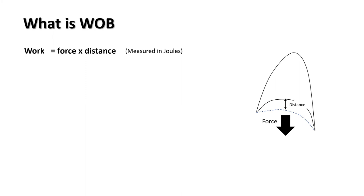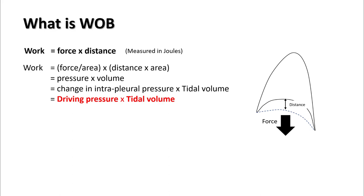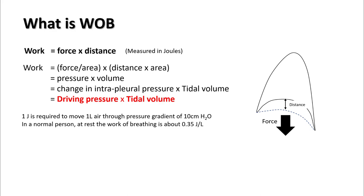Work of breathing is force times distance and is measured in joules. The force is generated by the respiratory muscles and the distance is the total distance moved by the diaphragm and ribcage. If you multiply and divide by area, you get work as pressure times volume — where pressure is the negative inspiratory pressure generated inside the pleura, multiplied by the tidal volume breathed in. One joule is required to move one liter of air through a pressure gradient of 10 centimeters of water; in normal breathing, work of breathing is about 0.35 joules per liter of minute ventilation.